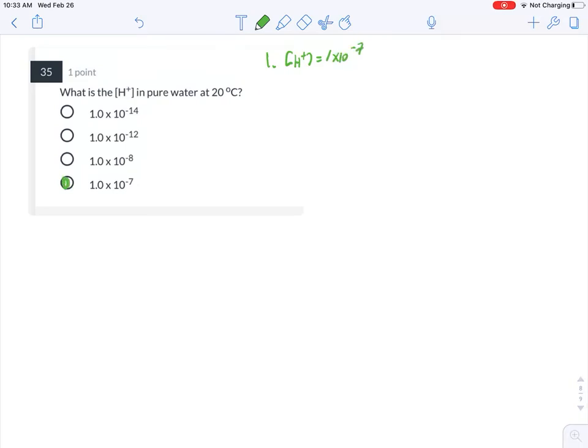Or you could plug it into the equilibrium constant. Write the concentration of hydrogen ions times the concentration of hydroxide ions equals Kw. Since these two values are equal, H+ times H+ is 1 times 10 to the minus 14. Take the square root of both sides and you get 10 to the minus 14.